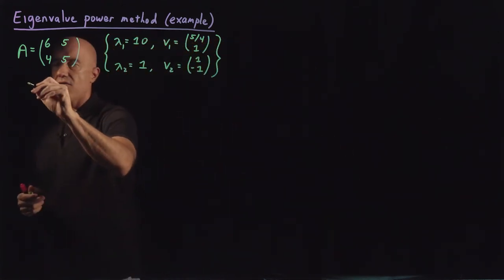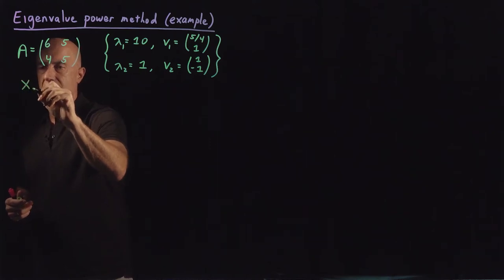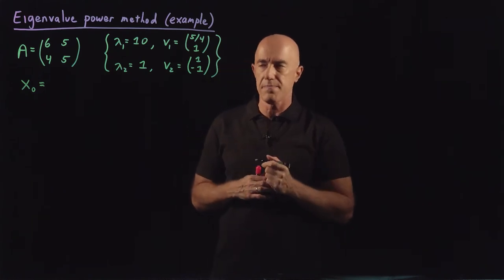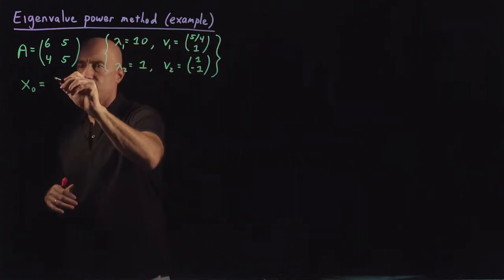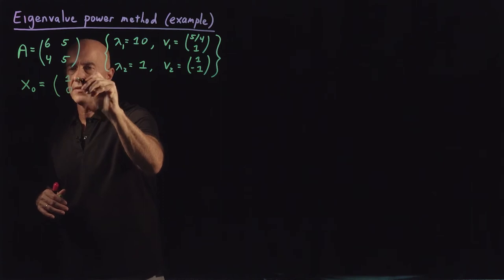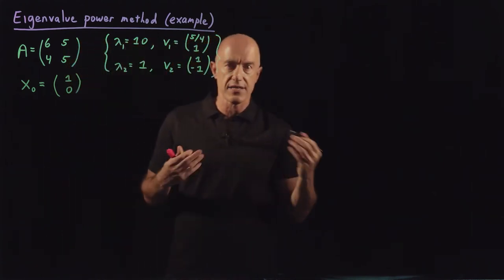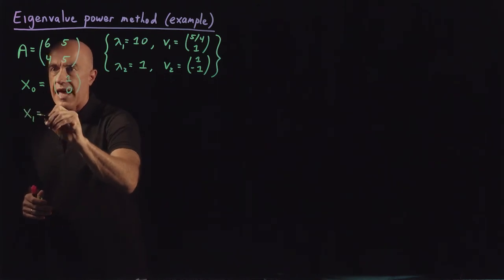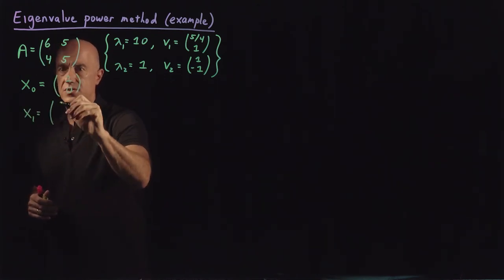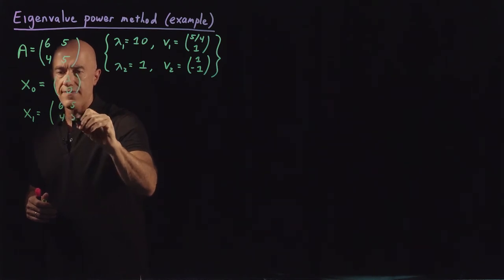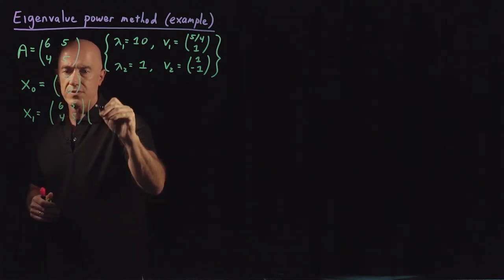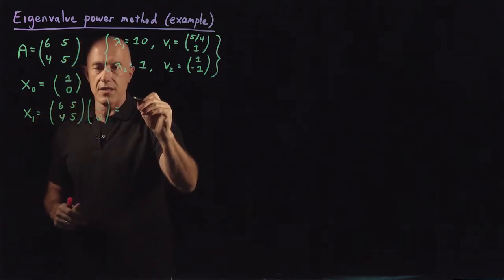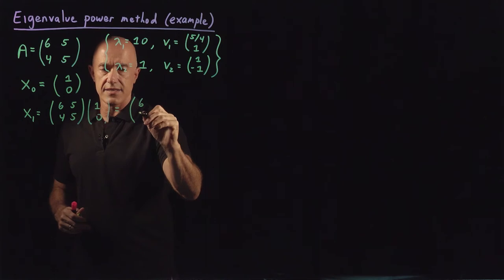To start the power method we need some initial vector that we're going to multiply by A. Let's just choose a simple one — I'll choose x0 = [1, 0]. Then x1 is A times x0, so [6, 5; 4, 5] times [1, 0]. That will just pick out the first column, so we get [6, 4].